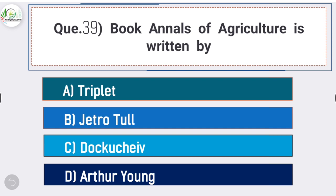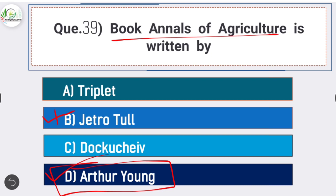Question number thirty-nine: book 'Annals of Agriculture' is written by - answer is option D - Arthur Young. The book Annals of Agriculture is written by Arthur Young.